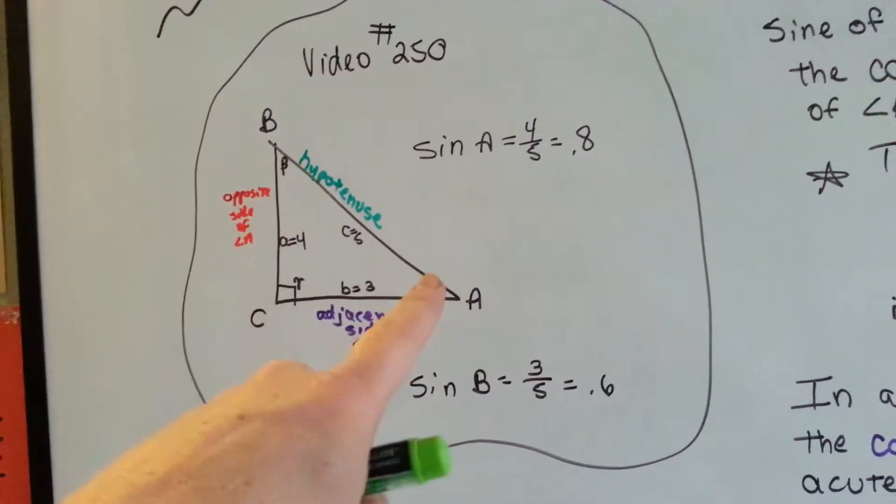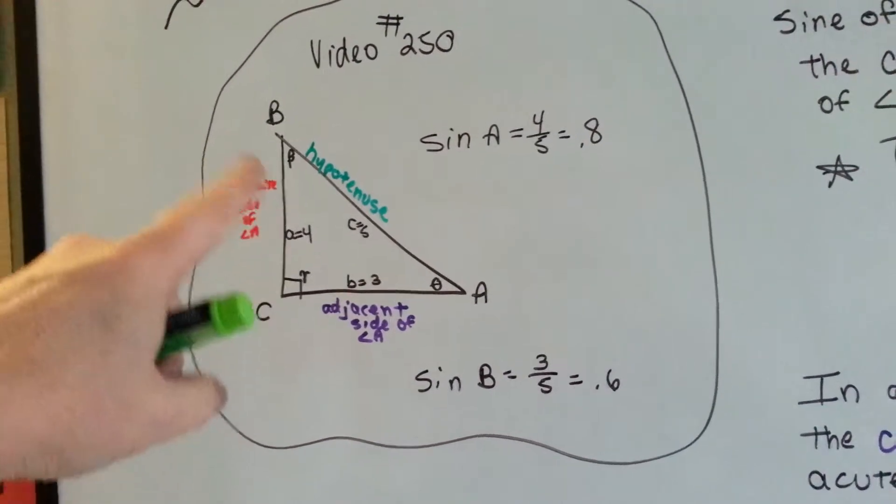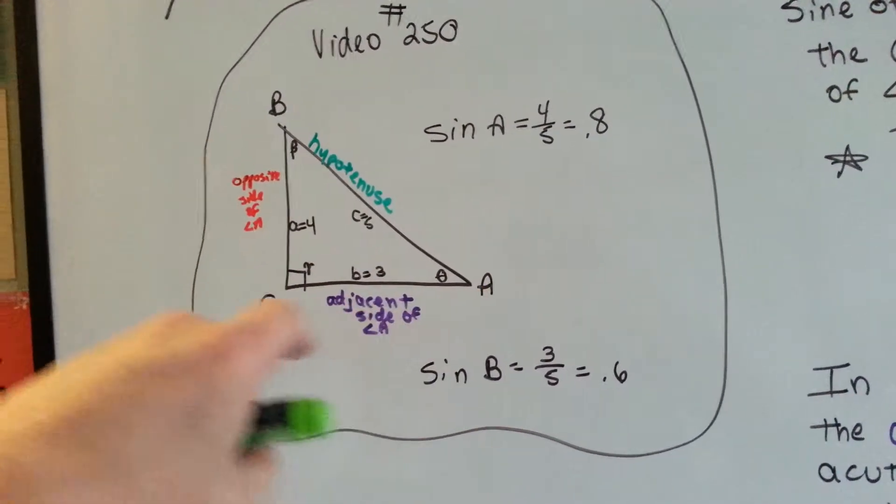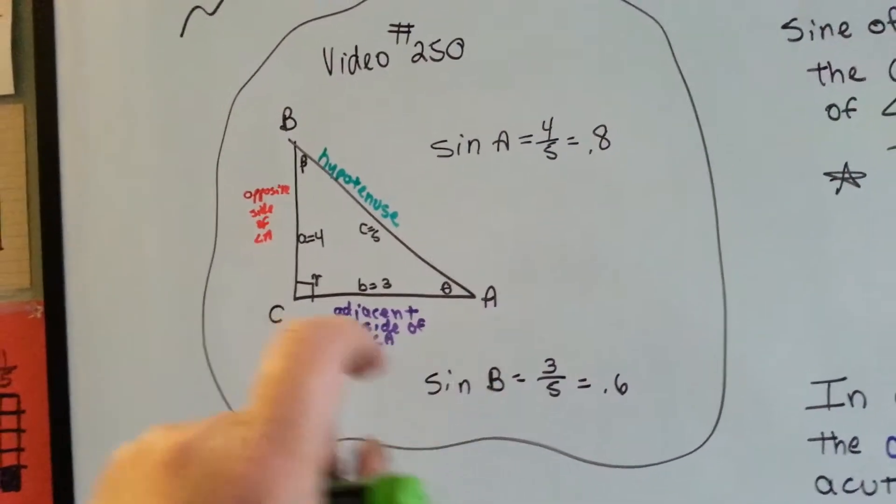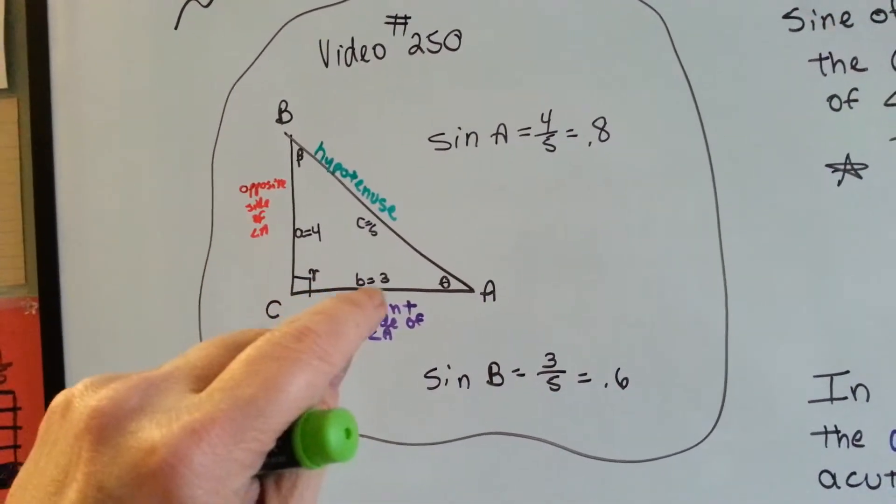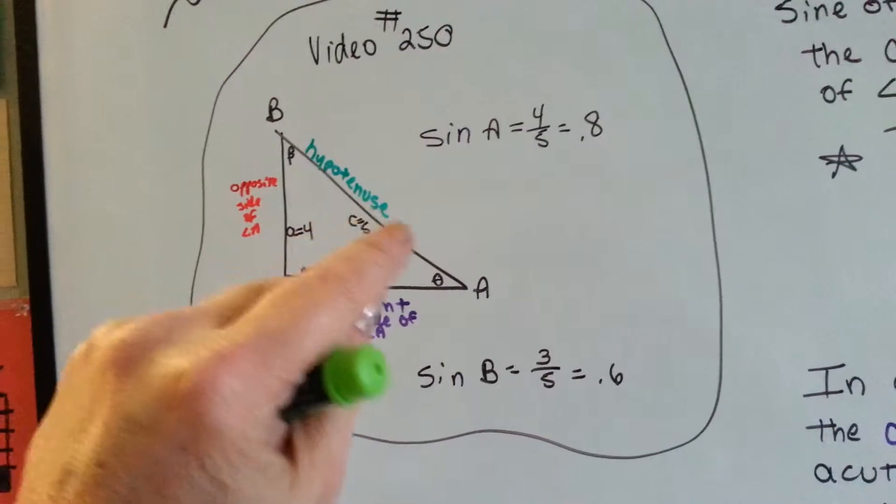We had a right triangle. This is the hypotenuse. This is the opposite side of angle A, because here's A. This is the adjacent leg of A. This is side B, this is side A, this is side C.